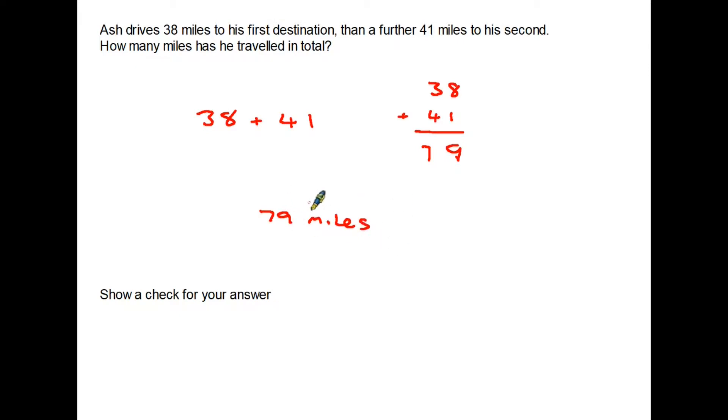Okay you've answered the question, scored maybe a couple of points for that one in your exam and then you notice at the bottom it says show a check for your answer and usually this is worth that extra mark that you might be looking for. What do we do?